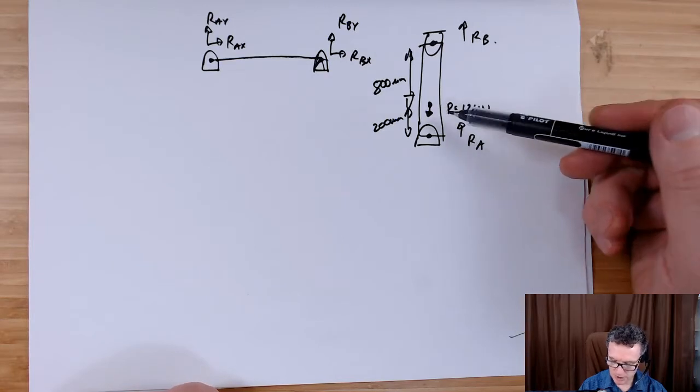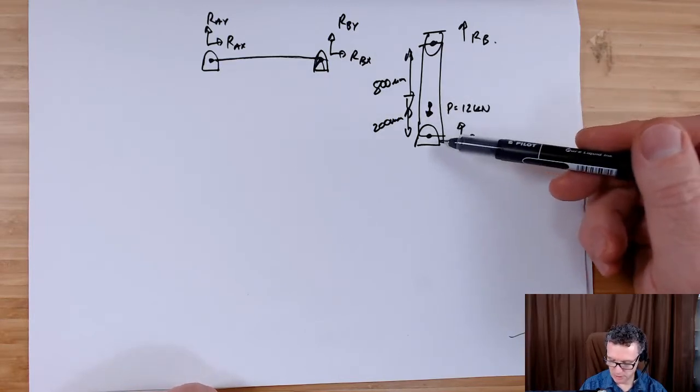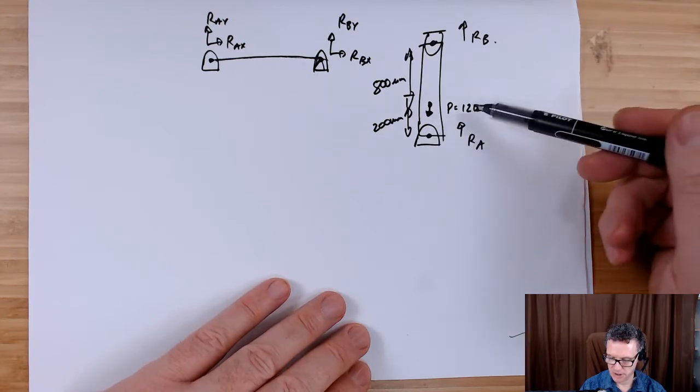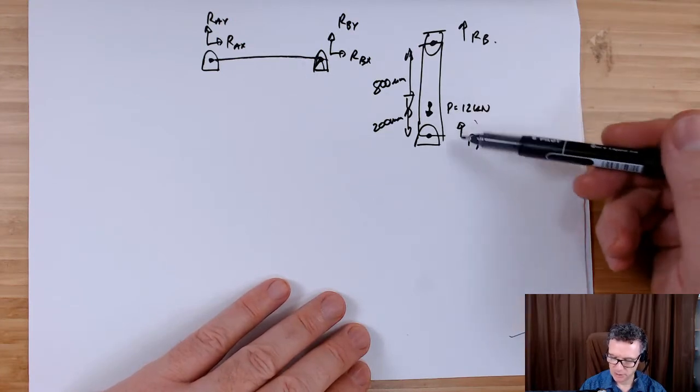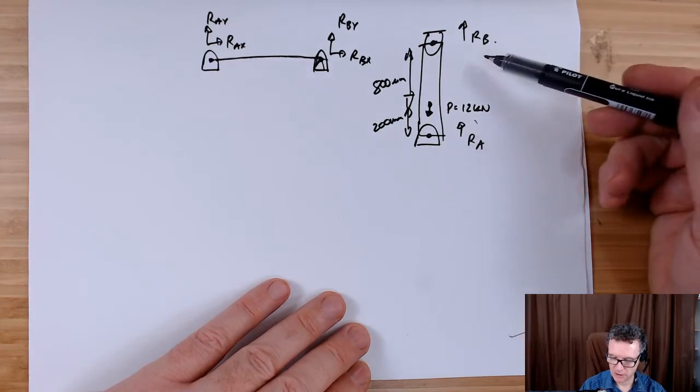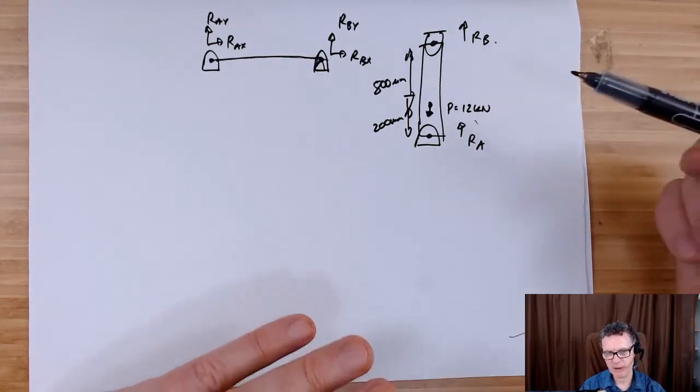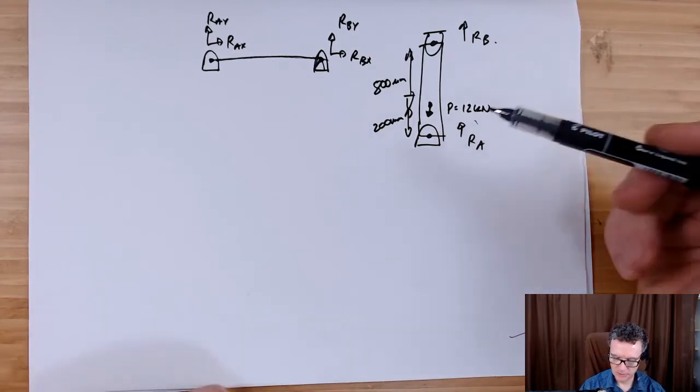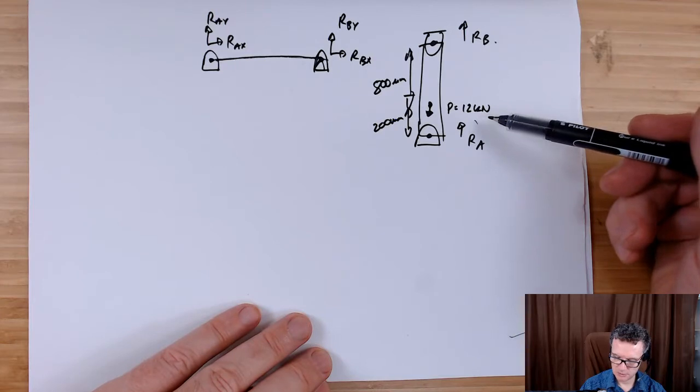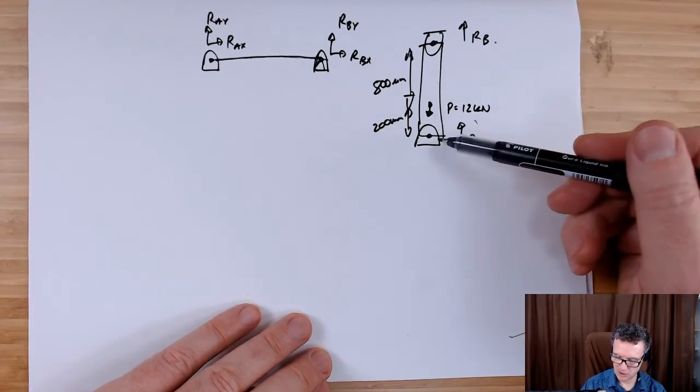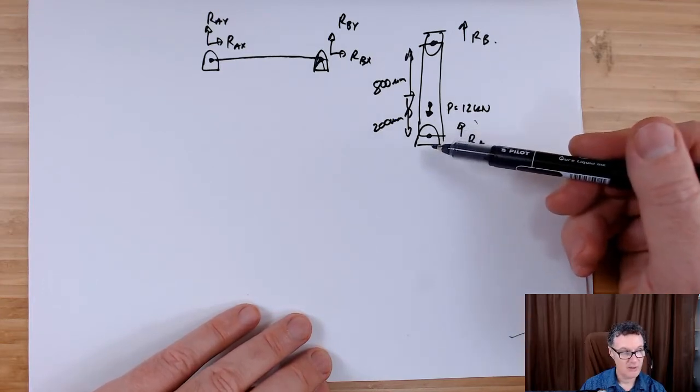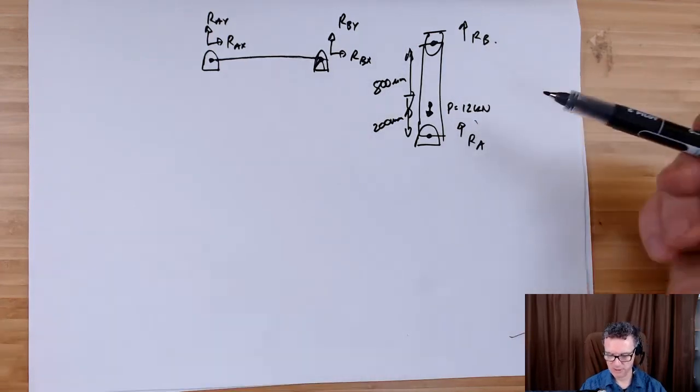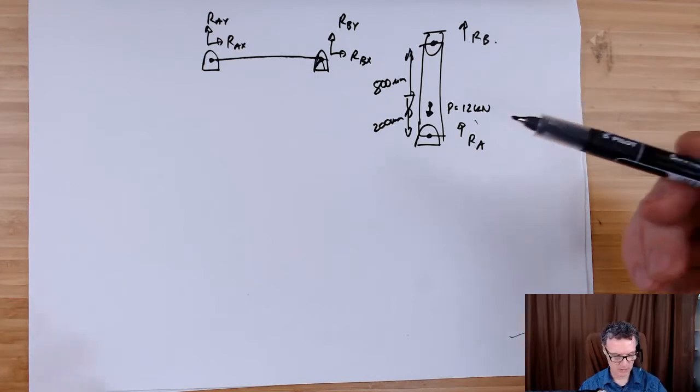The load is being applied quite close to the pivot at Ra, so we would actually imagine in this particular case that probably there'd be more reaction at Ra than there is at Rb. That would be our intuition as an engineer, because if we take that force and put it all the way down, actually on the pivot, then there would be no reaction at Rb.